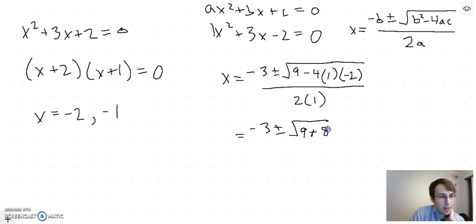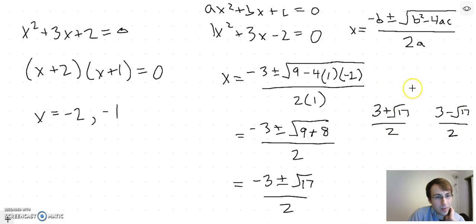Which is negative 3 plus or minus square root of 9 plus 8, because this term would come out to negative 8, and then it's 9 minus negative 8, so it's plus, over 2. Which is negative 3 plus or minus square root of 17 over 2. So our two solutions then are 3 plus root of 17 over 2 and 3 minus root of 17 over 2. If you find the decimal representations of these and plug them back into here in your calculator it should check out.